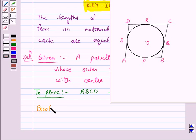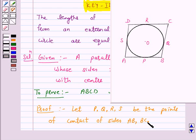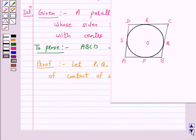Proof: let P, Q, R, S be the points of contact of sides AB, BC, CD and DA respectively.